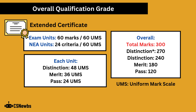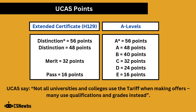Any marks lower than 120 would be unclassified — a fail. For UCAS points, the tariff is used by some universities when setting entry requirements, though not all use it. A distinction star is 56 UCAS points, equivalent to an A* at A-level. A distinction is 48 points, equivalent to a grade A. A merit is equivalent to a C and a pass is equivalent to an E at A-level.